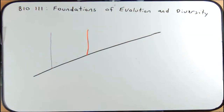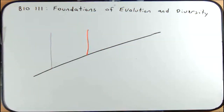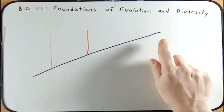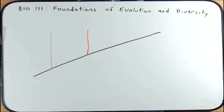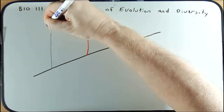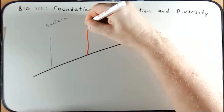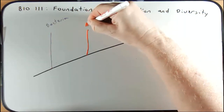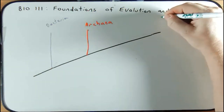In this phylogenetic tree that I've drawn here, you see three branches — this first one in purple, this second one in red, and the last one is our third. These three branch points represent the three domains of life. The first is bacteria, the second in red is archaea, and the last one down here are eukaryotes.